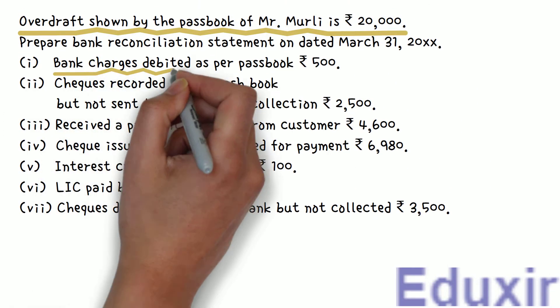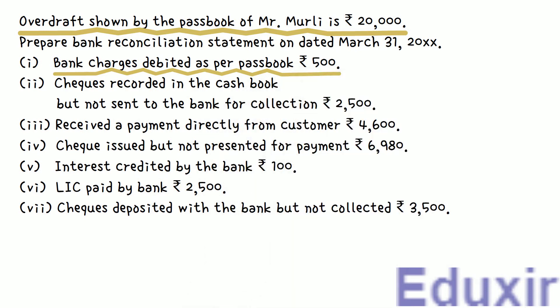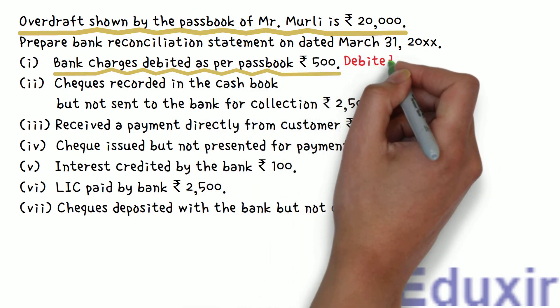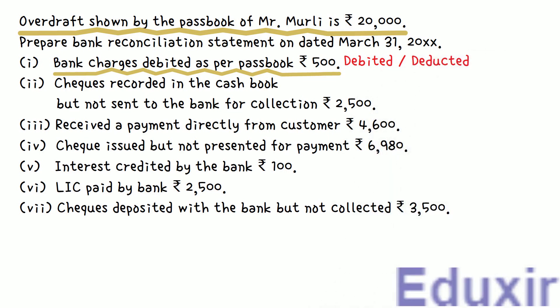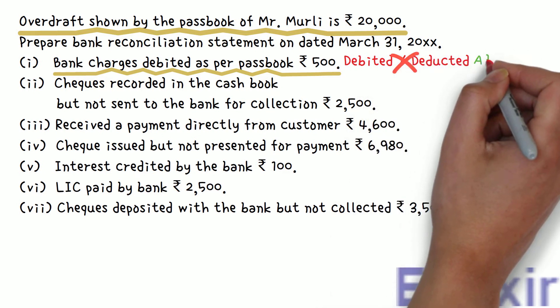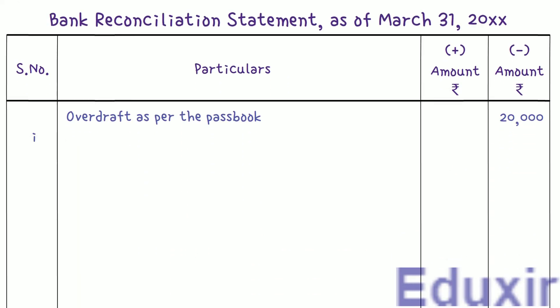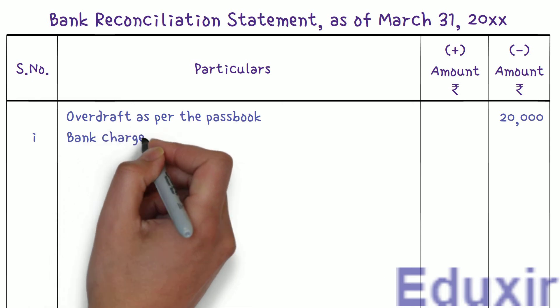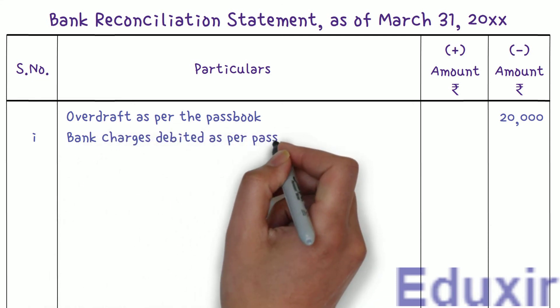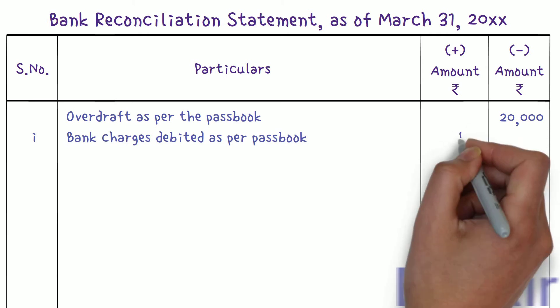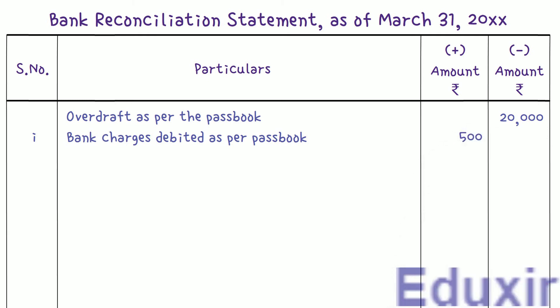Item 1: 500 rupees of bank charges are debited in the passbook. When the bank debits the bank charges, the business does not know about these charges until the bank statement is received, so there will be a difference in balances. We need to add this amount to the passbook balance to get the cashbook balance. We write the particulars as 'Bank charges debited as per passbook' and enter 500 rupees in the plus amount column.